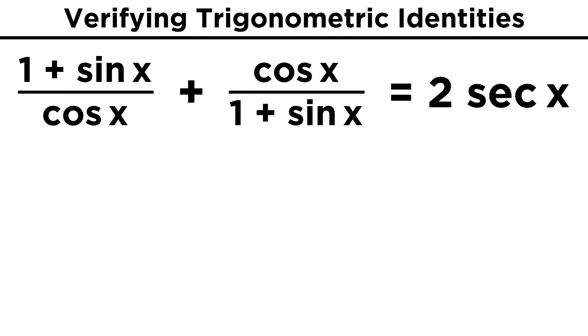Now let's try a couple that are harder than these. This one has two fractions on the left, one plus sine over cosine, plus cosine over one plus sine, and that will equal two secant x.